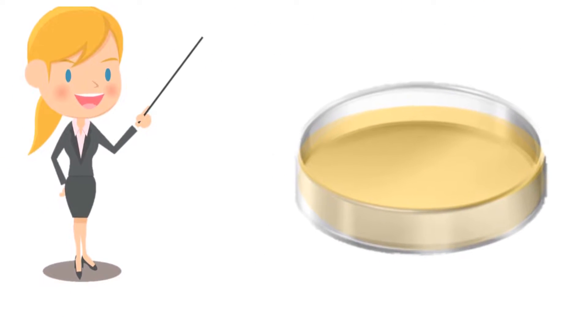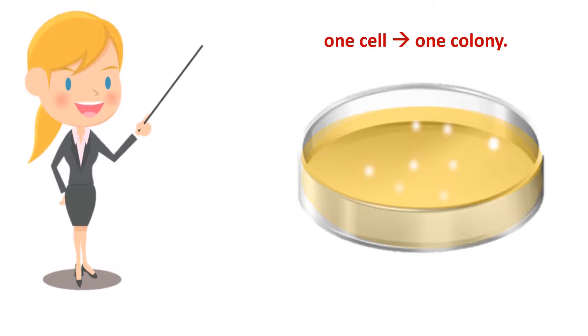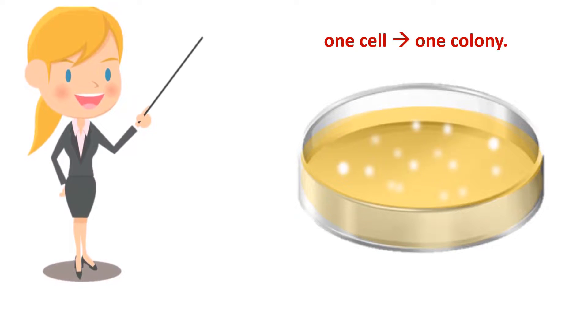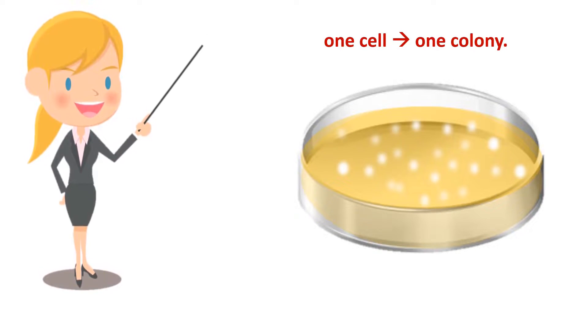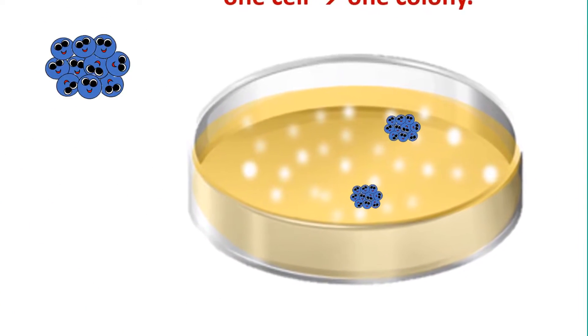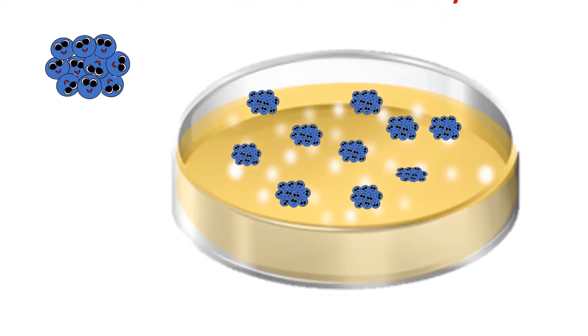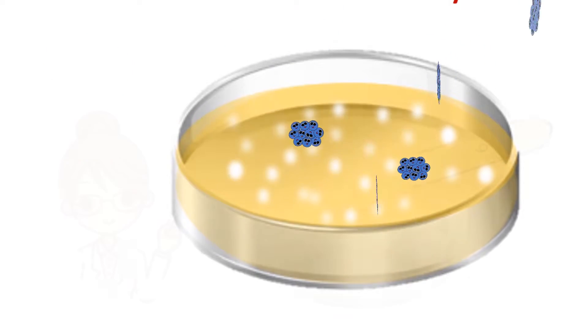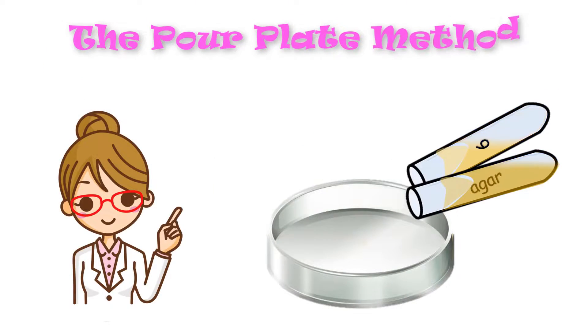The dish or plate will develop colonies following a time of incubation. After a given time for growth to occur, a successfully streaked plate will show progressively thinning colonies with completely isolated colonies. There is also the pour plate technique.